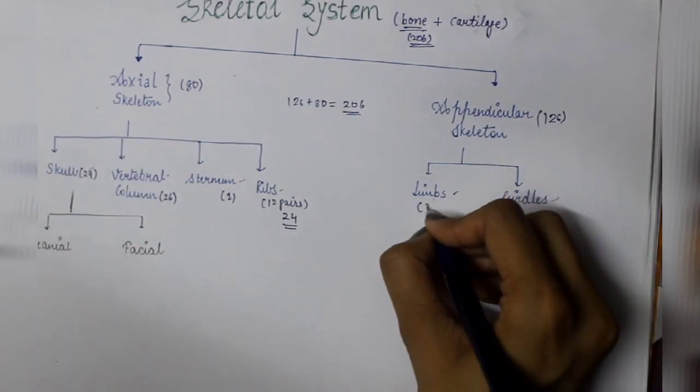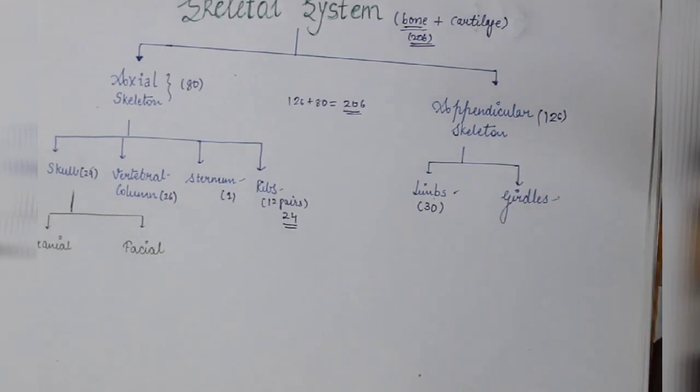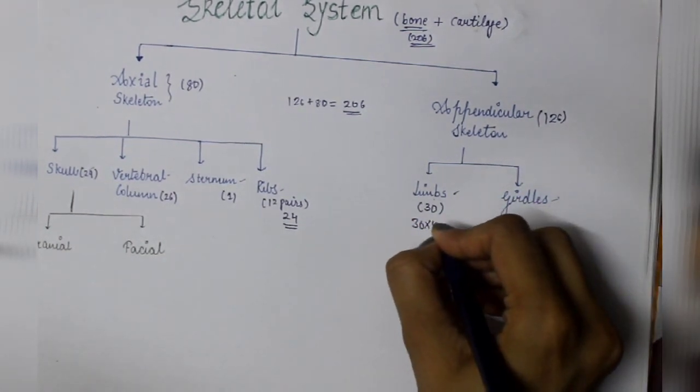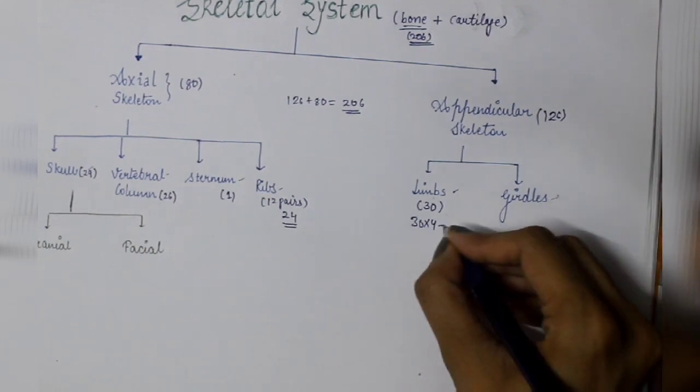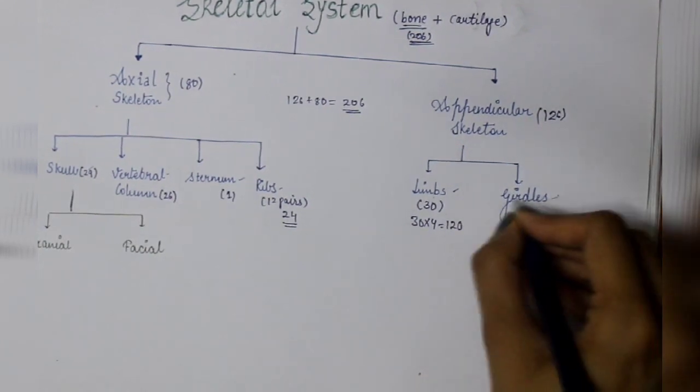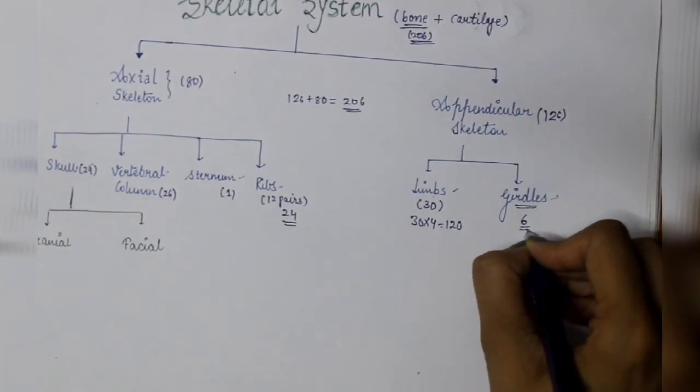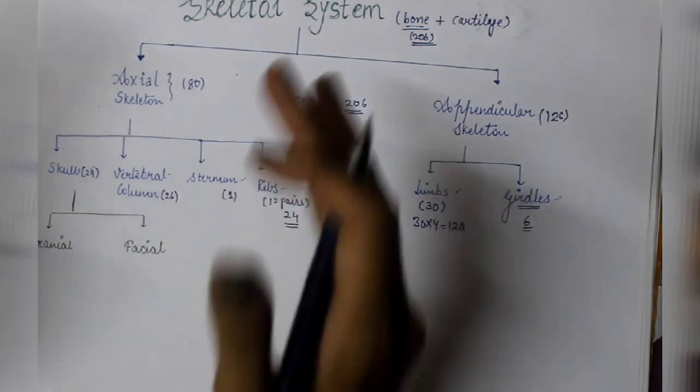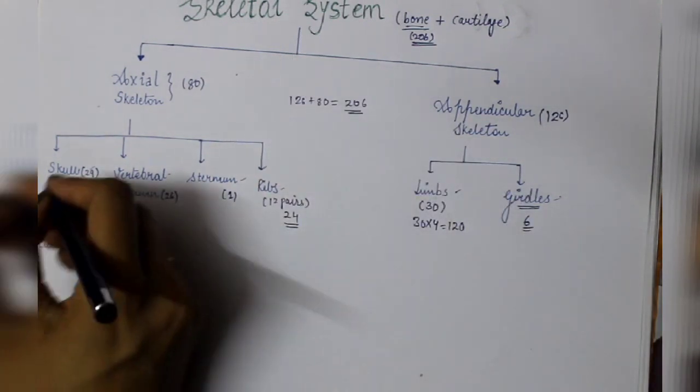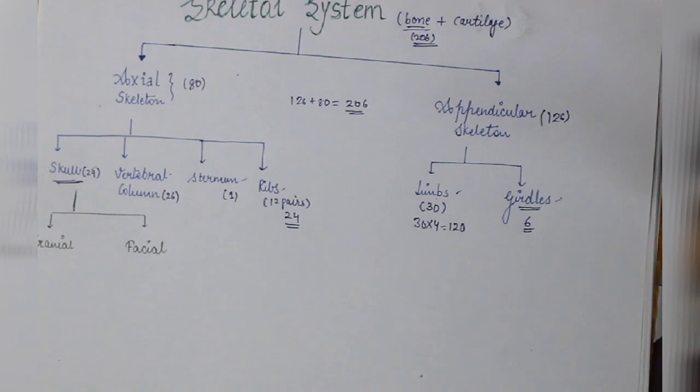In the limbs, there are 30 bones in each limb. So 30 into 4, that means 2 hands and 2 legs equals 120. And in girdles, total 6 bones. In this lecture, we are basically prominently going to study about skulls and the mnemonics of skulls.